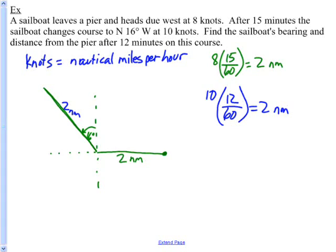So now they say find the sailboat's bearing. We went straight west, then we changed course north 16 degrees west, and we landed right here after 12 minutes on that course. And they say find the direction back, distance from the pier, the bearing back to that pier. I'm going to change this distance back to the pier. So I'm going straight back. Give me the directions back there.